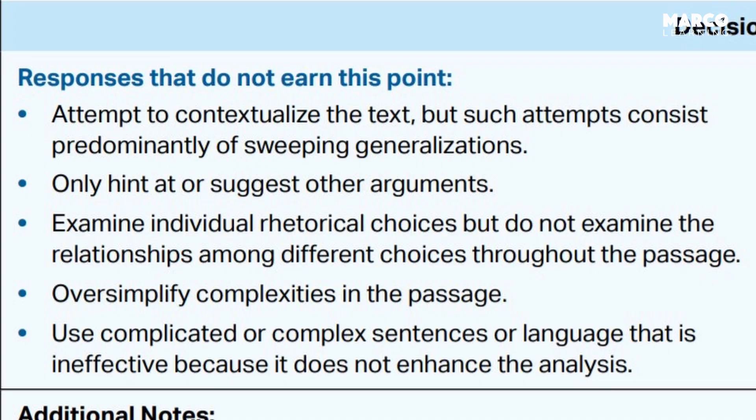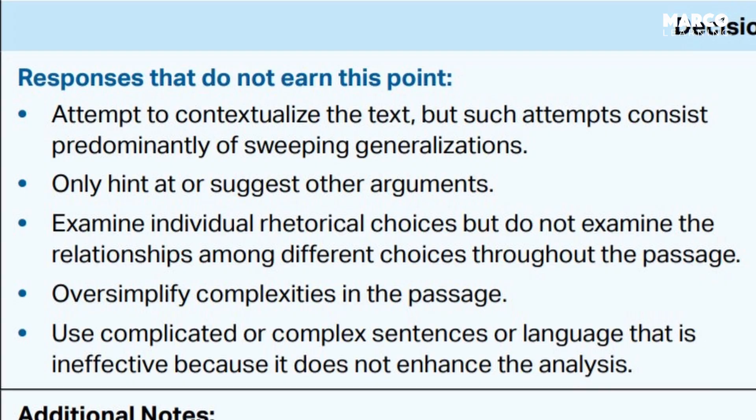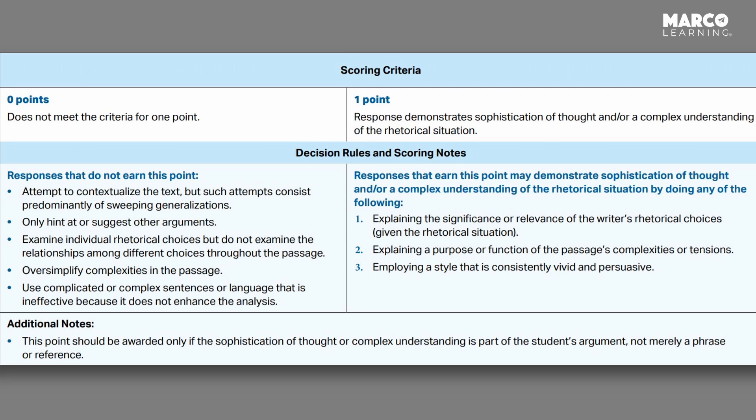Number four is pretty straightforward: you oversimplify complexities in the passage. Right in the middle of the passage there's a very nuanced, complicated image, and you just flatten it out to a black-and-white argument — that's going to hold you back from earning the sophistication point. And finally, if you use complicated or complex sentences or language that is ineffective because it does not enhance the analysis, if your writing is so weak and thin, it will hold you back. It says at the bottom: this point should be awarded only if the sophistication of thought or complex understanding is part of the student's argument, not merely a phrase or a reference.